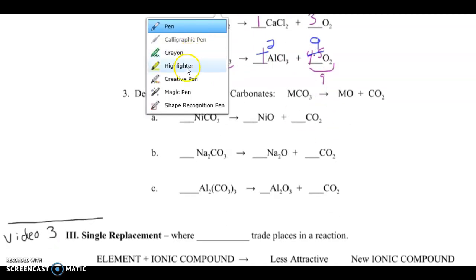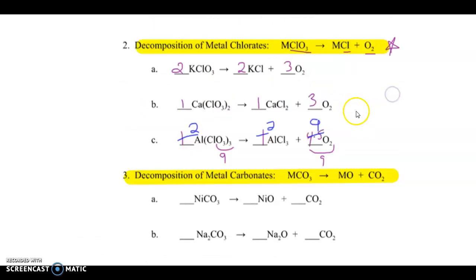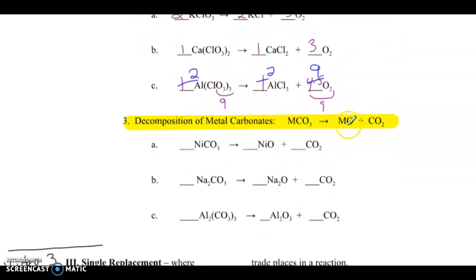And we've got one last type of decomposition we're going to cover. Decomposition of metal carbonates. So kind of similar to the metal chlorates, we have that oxygen there. So the metal carbonates will always give us a metal oxide plus carbon dioxide gas. Let's go through a couple of those examples. So if we have nickel two carbonate, we're going to get nickel two oxide plus carbon dioxide. Is this one balanced? Let's see. One nickel, one nickel, one carbon, one carbon, three oxygen, three oxygen. Oh, look at that. Beautiful.